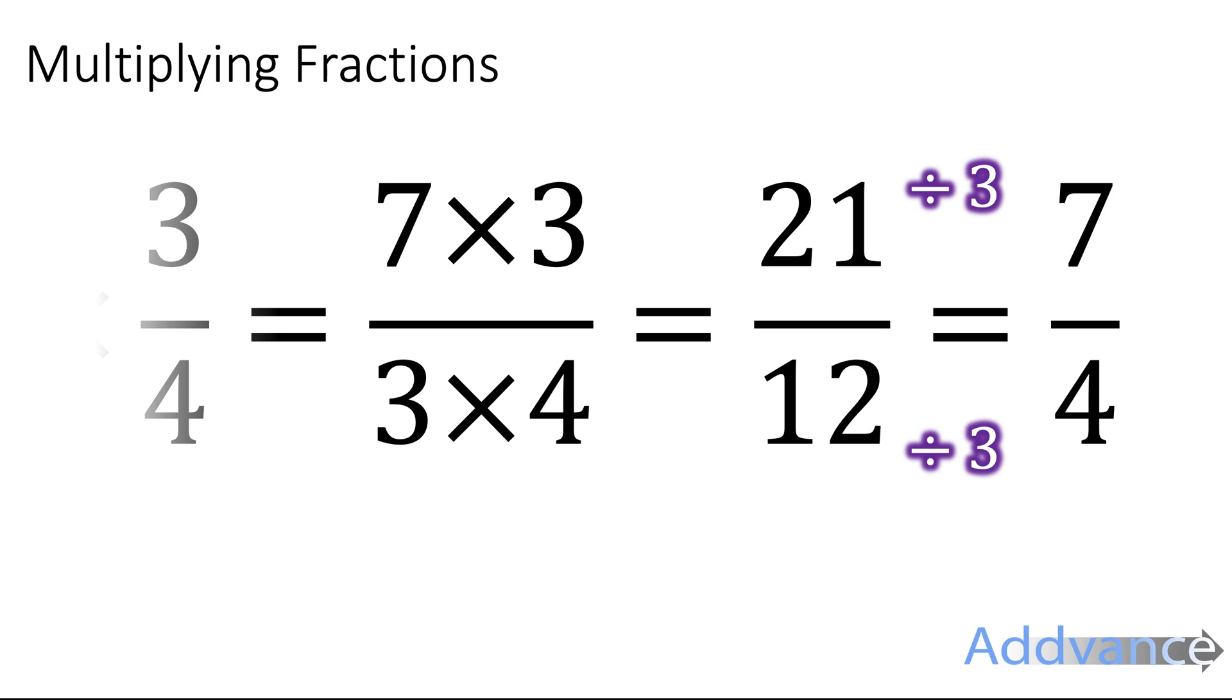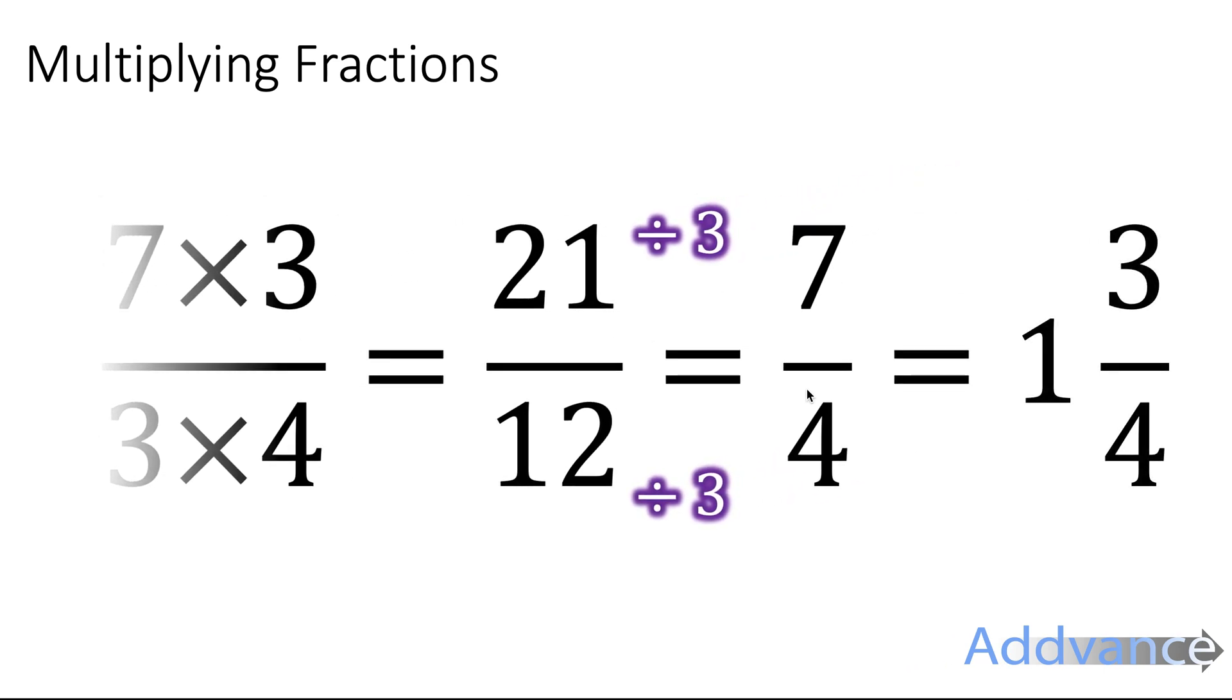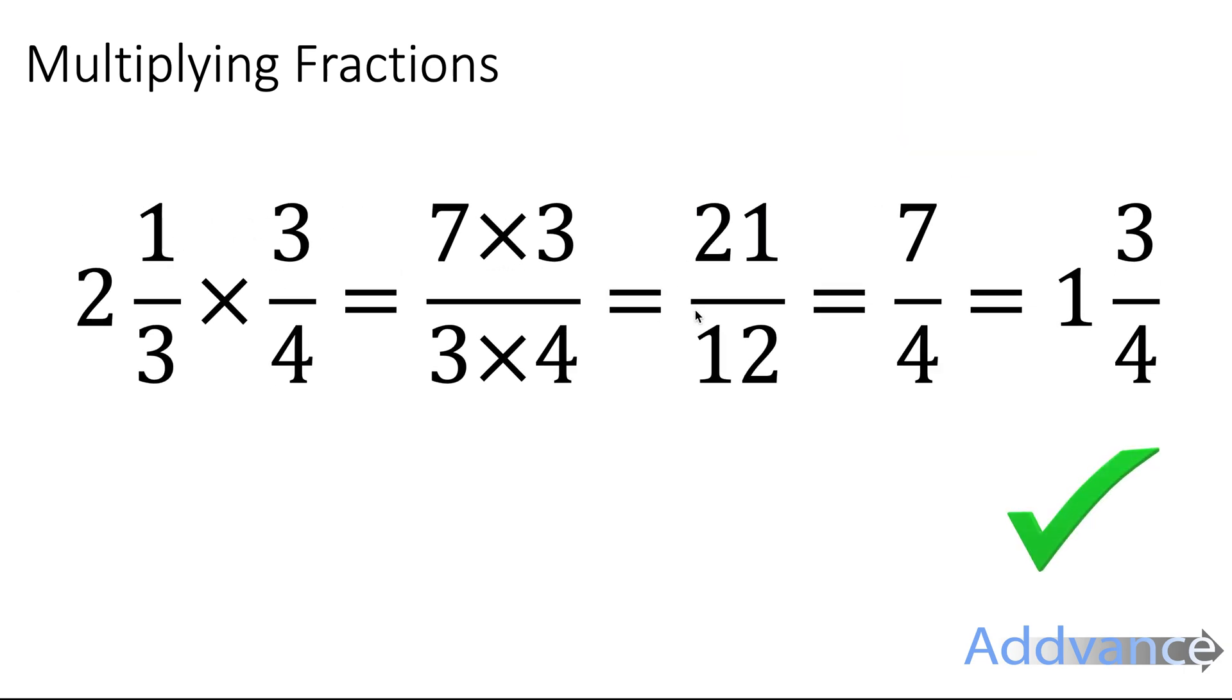But they can be written as a mixed number. 7 quarters is the same as 1 and 3 quarters. You can see a picture of that at the top. That's 7 quarters which is the same as 1 whole and 3 quarters. Again, I have a video on improper fractions and mixed numbers if you're not sure. That is the final answer, 1 and 3 quarters.